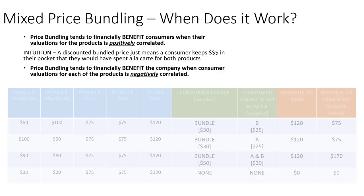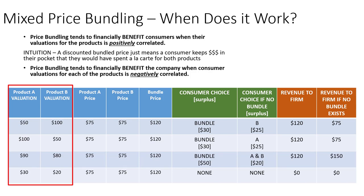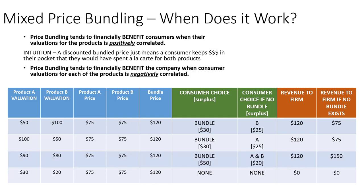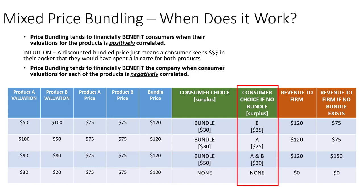So when does price bundling really work for marketers? It depends on whether most customers tend to have positive or negative correlations in their valuations of the products you're offering. Consider four different customers with their valuations for Product A and Product B. The prices are the same for all: $75 for Product A, $75 for Product B, and $120 for the price bundle. Based on the valuations and prices, we can determine consumer choice. The first three customers all purchase the bundle because it gives them the highest consumer surplus. Without a bundle, Customer 1 would only pick Product B (leaving them $25 better off), Customer 2 would pick Product A, and Customer 3 would select both a la carte individually.